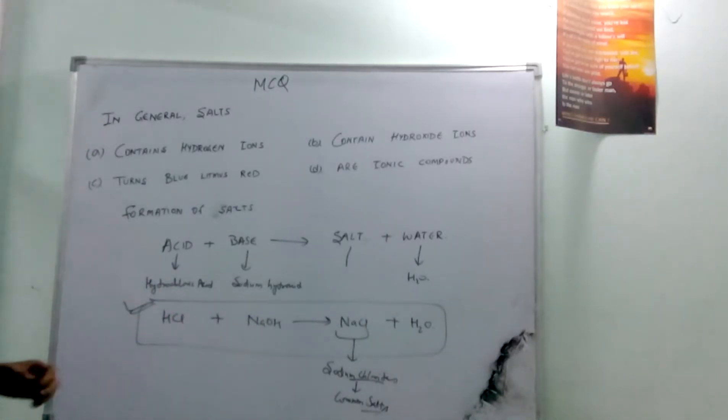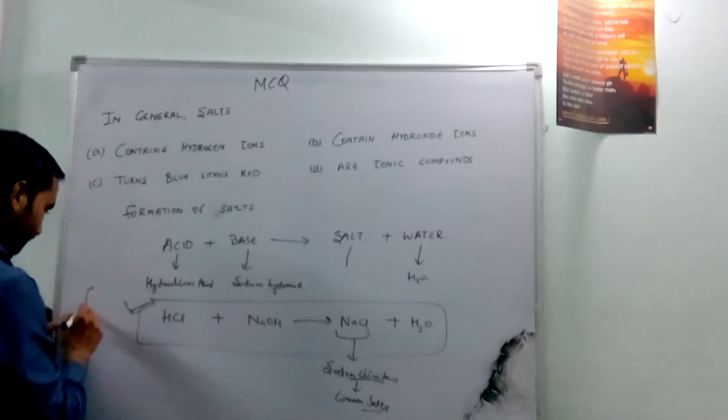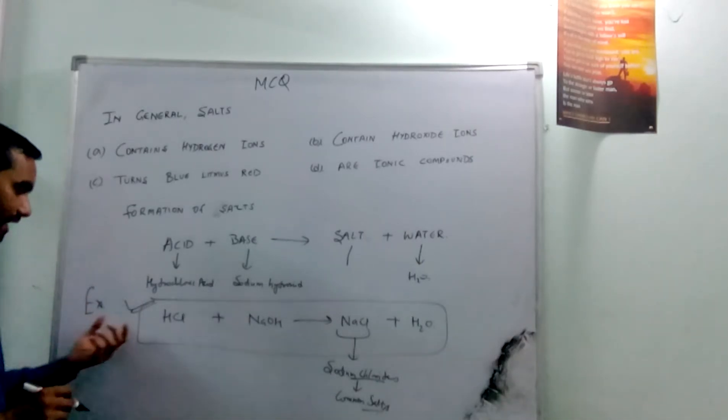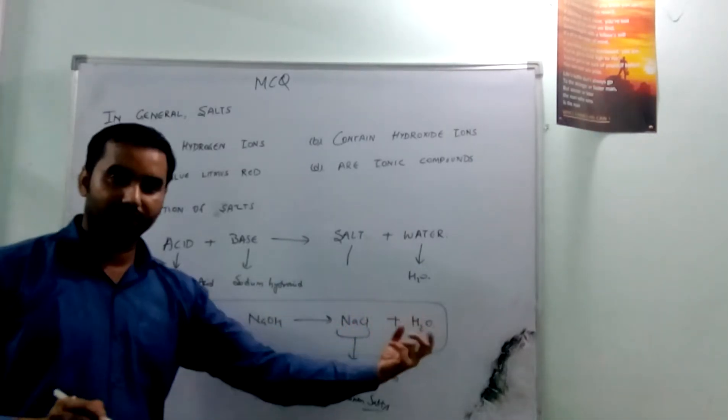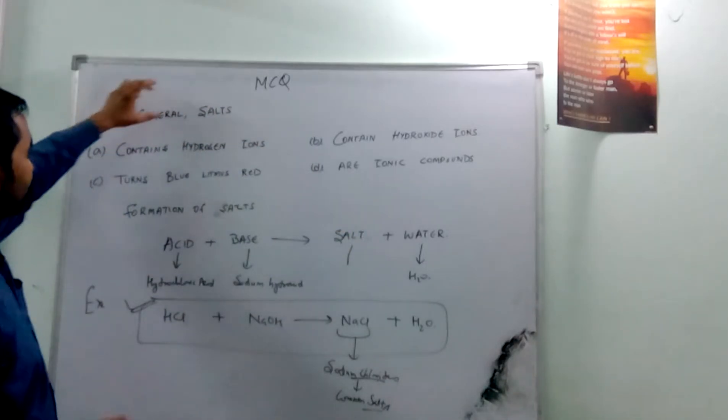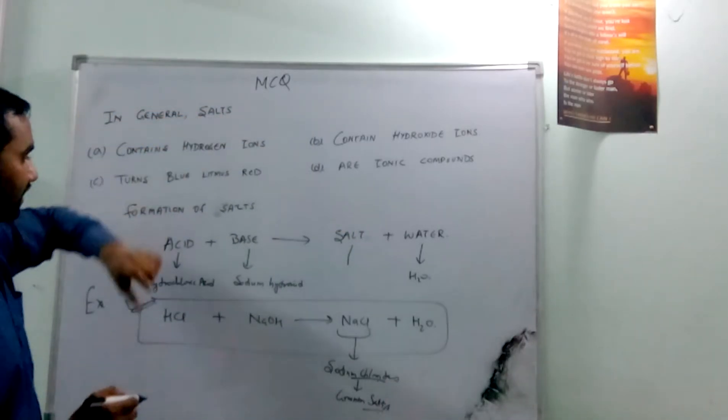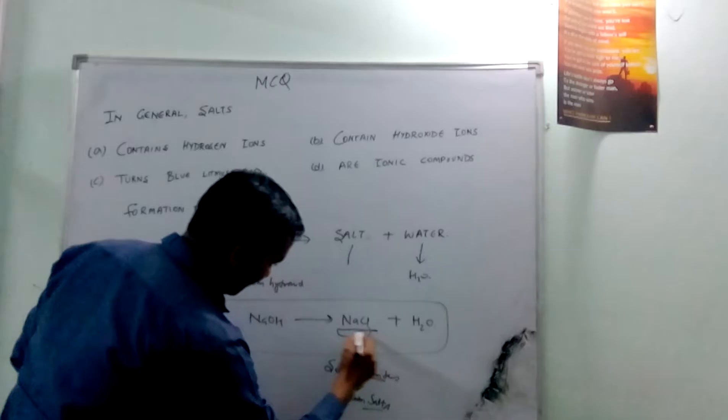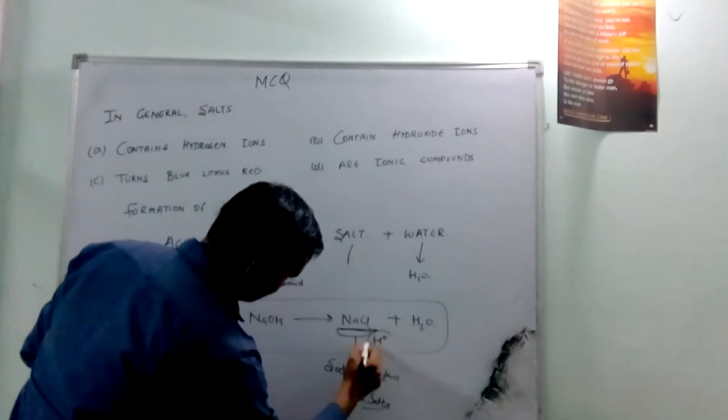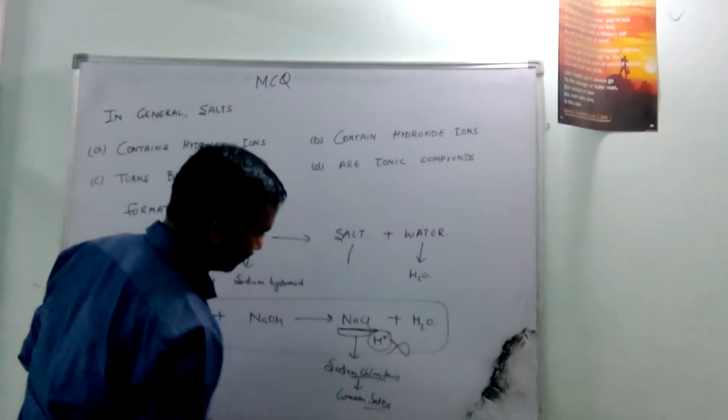My question is, by this equation, we can conclude which option is correct. Now this is an example when acid reacts with base to produce salt and water. The first is: in general, salt contains hydrogen ion. Do you think there is any hydrogen ion present? No.